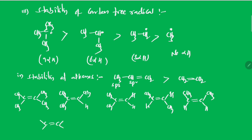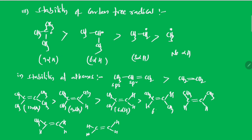Looking at more examples: one compound contains twelve alpha hydrogens, another contains nine, another six, another three, and some have no alpha hydrogen. This establishes the stability order of alkenes. Thank you.